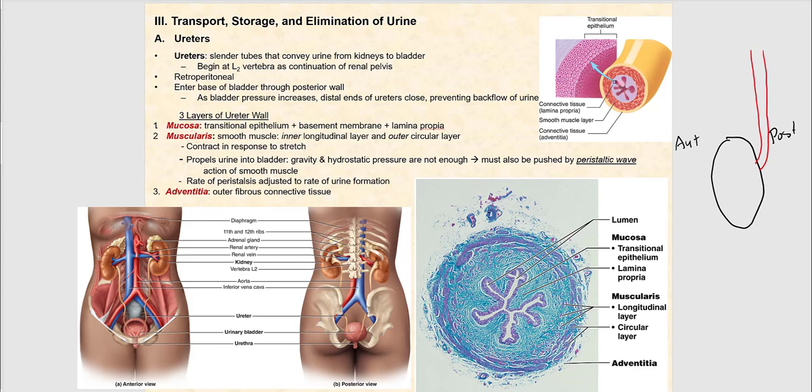As the bladder fills with urine, pressure builds, which causes the distal ends of the ureters to close, preventing the backflow of urine from the urinary bladder back into the ureters and potentially back up into the kidneys. The wall of the ureter has three layers. The mucosa is in direct contact with the lumen and consists of transitional epithelium, a basement membrane, and the lamina propria.